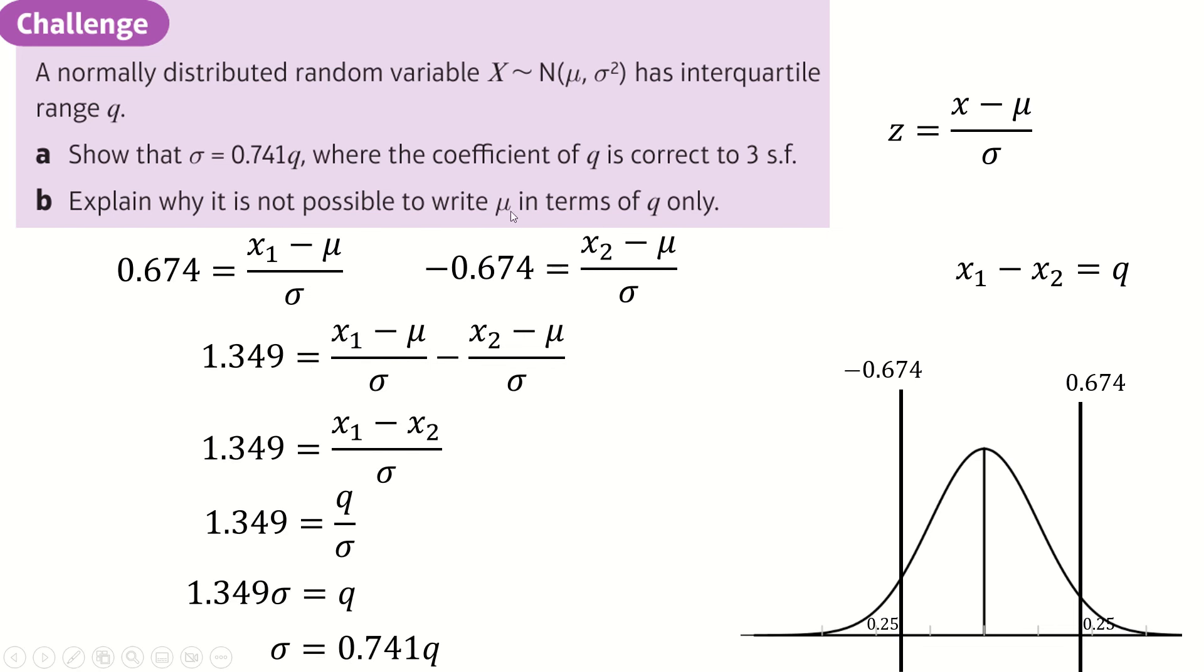Explain why it's not possible to write mu in terms of Q. Well, the only information you have is the interquartile range. And that doesn't change when you shift the thing left and right, thus changing mu. So this entire setup is completely independent of mu. So there's no way I can write anything intelligent about mu because Q is completely disaligned from it.